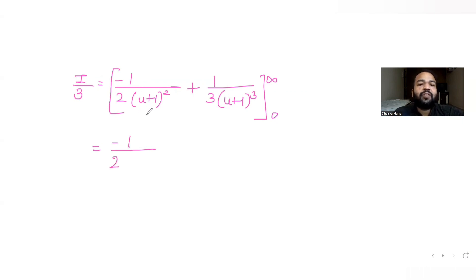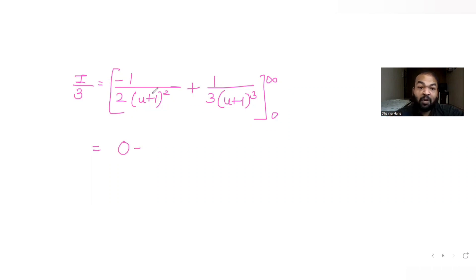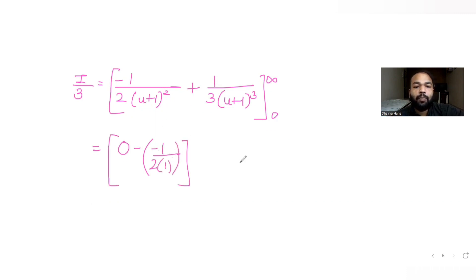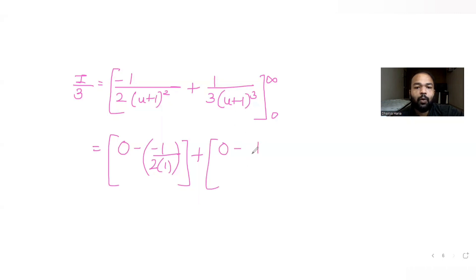Substituting the limits: at infinity, 1/∞ = 0, so both terms vanish. At u = 0: −(−1/2)·1/(0+1)² = +1/2, and −(+1/3)·1/(0+1)³ gives −1/3. So I/3 = 1/2 − 1/3.